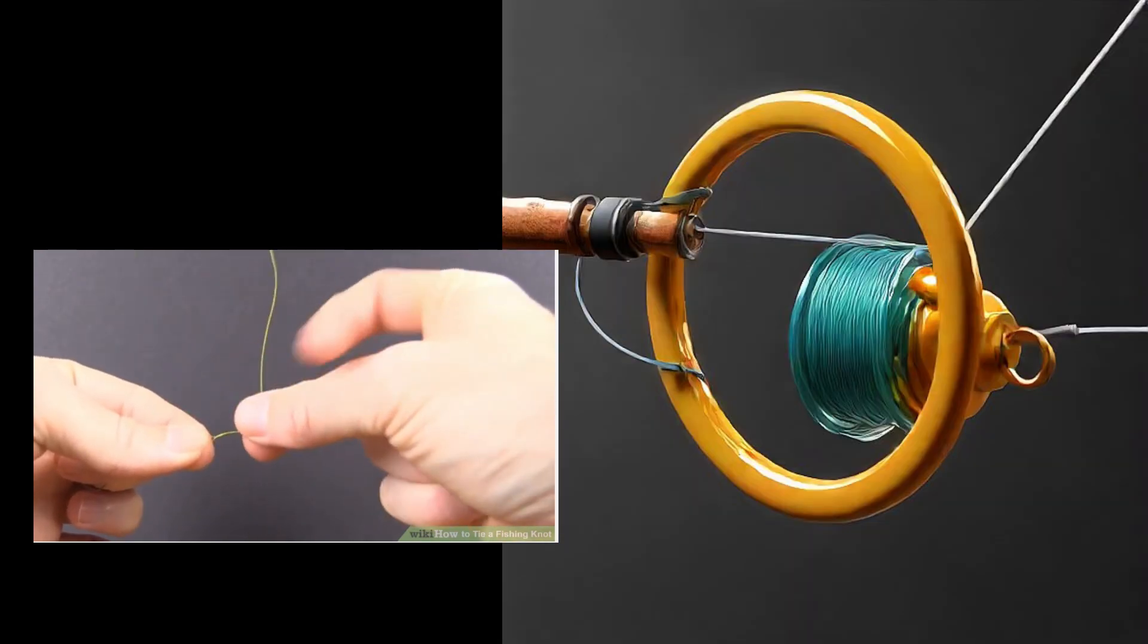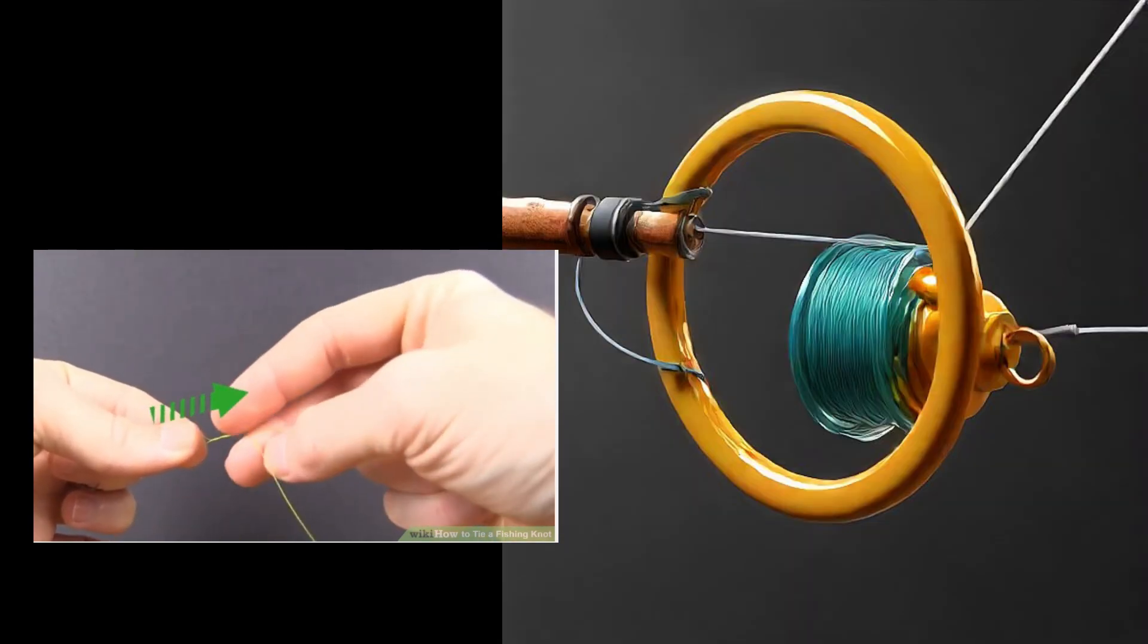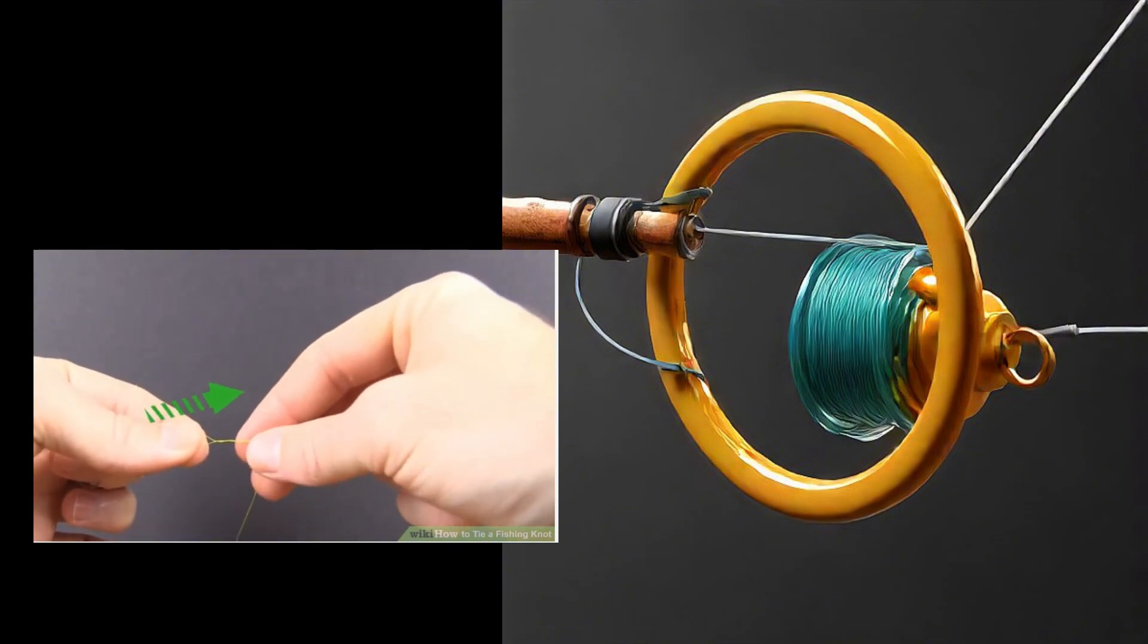Clinch knots are a popular choice for fishermen. It's known to be reliable and quick to tie, which means more fishing time.